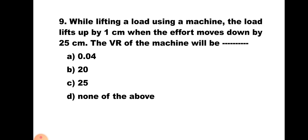Question number 9: While lifting a load using a machine, the load lifts up by 1 centimeter when the effort moves down by 25 centimeter. The VR of the machine will be — A) 0.04, B) 20, C) 25, D) none of the above. VR is the ratio of displacement of effort to displacement of load: 25 upon 1 equals 25. Hence the correct answer is C) 25.